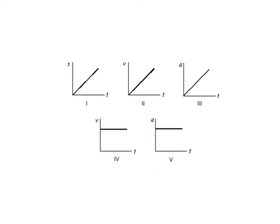The next five graphs vary more — we have some that are position, some velocity, and some acceleration. Velocity graphs will have a V, acceleration graphs will have an A. This first one is a position graph with a diagonal line, so the diagonal line tells us constant velocity, and it's headed up on the graph, so that's the positive or forwards direction.